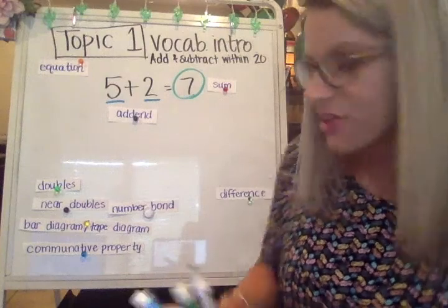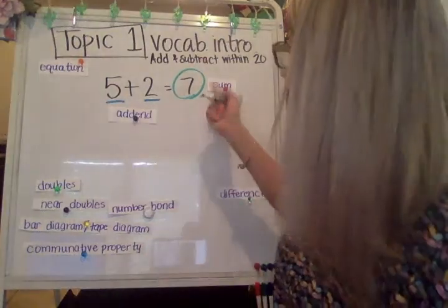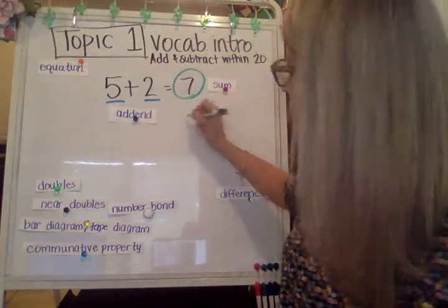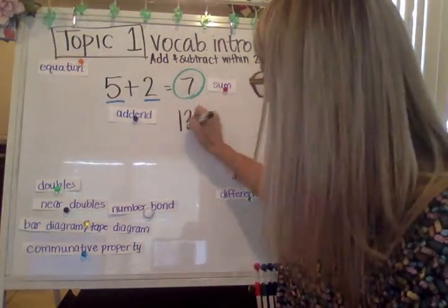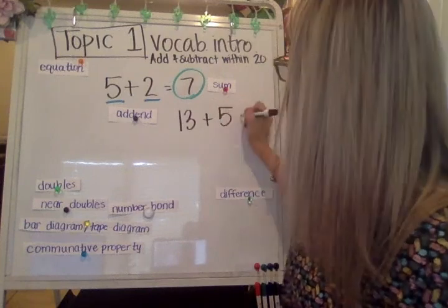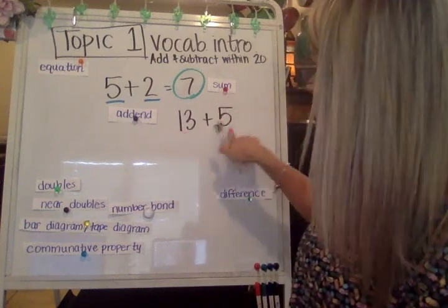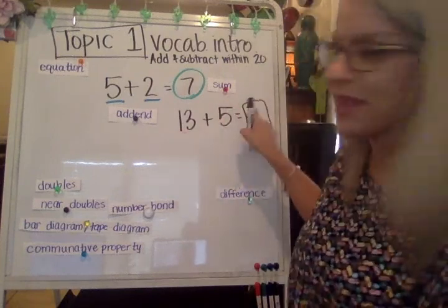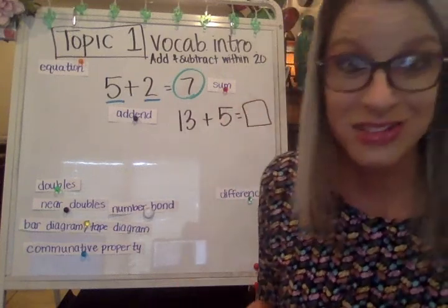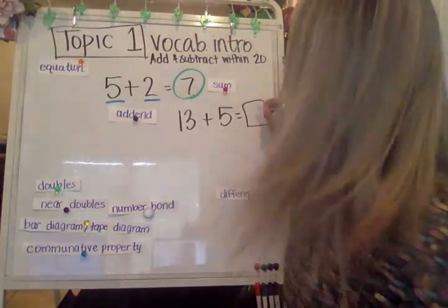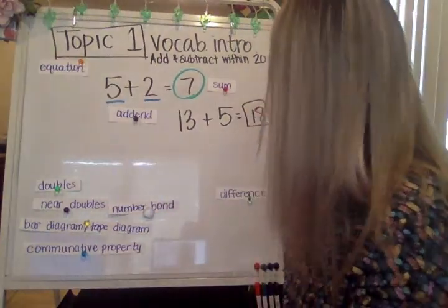If I showed you a couple of other equations — and I don't even have to go higher than 20 — I can say 13 plus five. Both of these numbers are addends. And then the answer for that, the sum, would be 18.